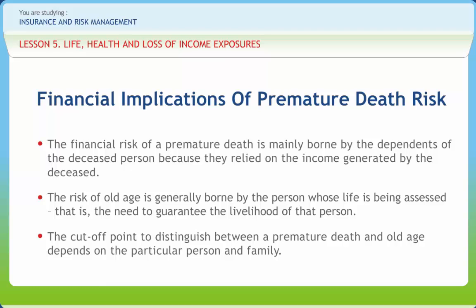Human beings, like machines, were assessed according to their ability to contribute to the economy. A machine is expected to operate during its economic lifetime. It may, however, break down before it reaches its life expectancy, causing its owner to suffer a loss of future income streams. A machine may also exceed its economic life, bringing about increased maintenance costs. The analogy between human beings and machines raises ethical questions and may be disliked by most readers, but it is a practical approach that helps characterize and quantify risk purely from a financial perspective.